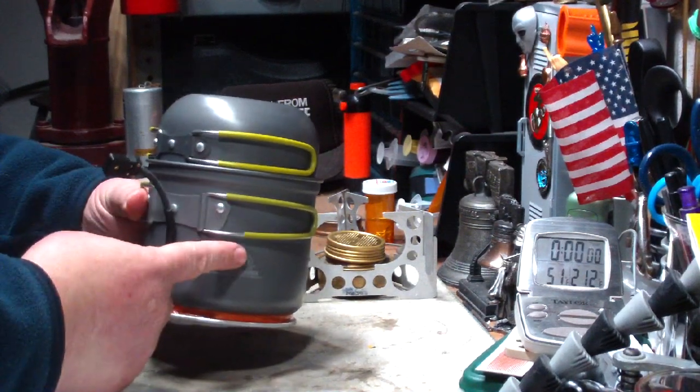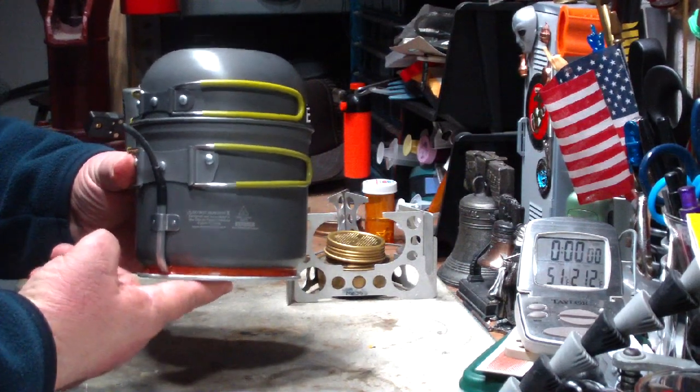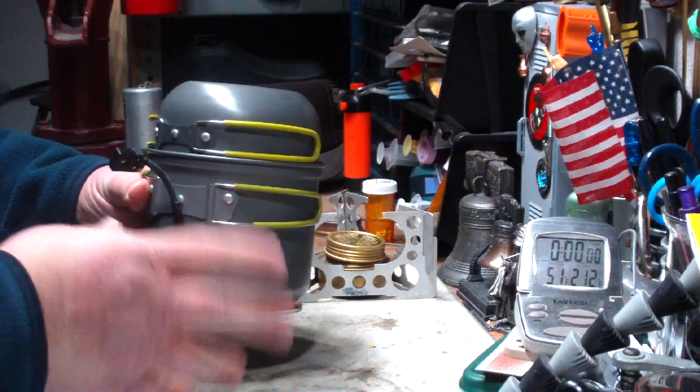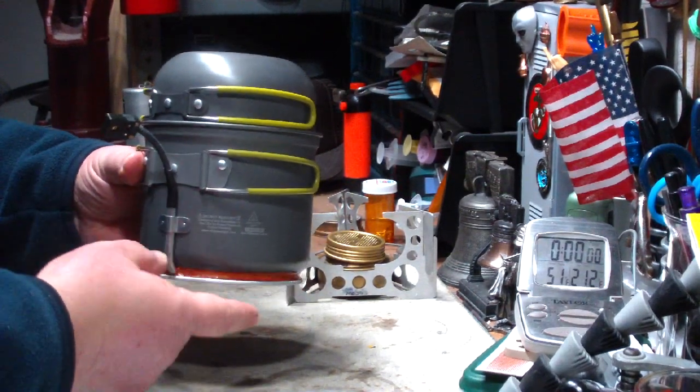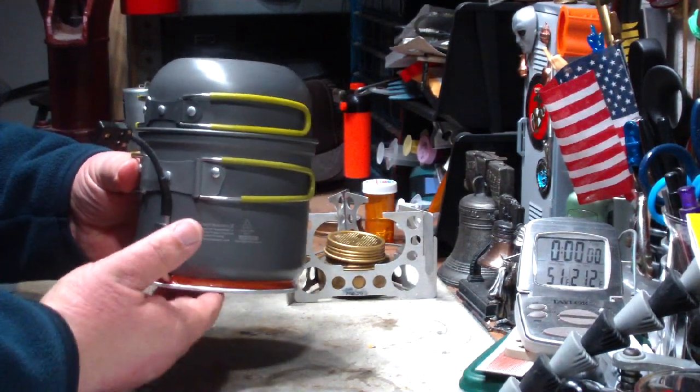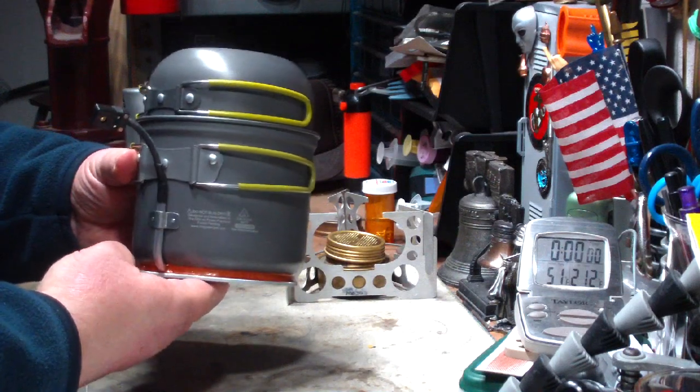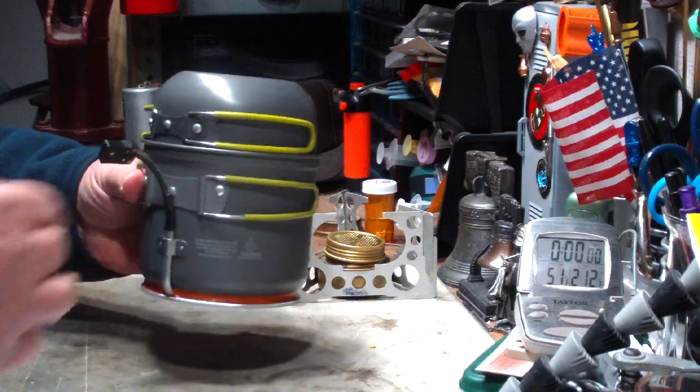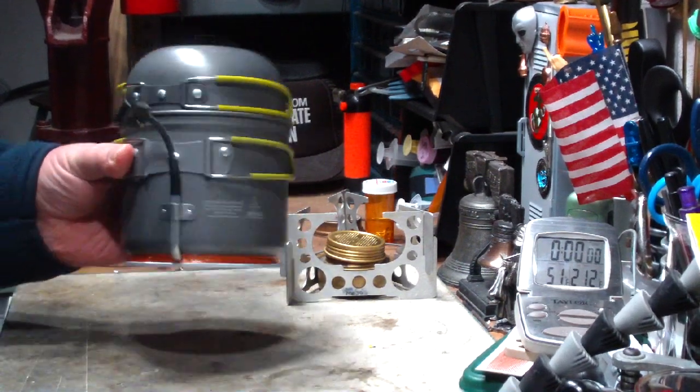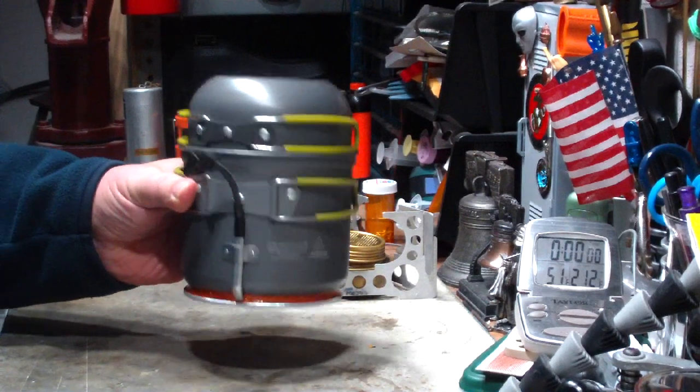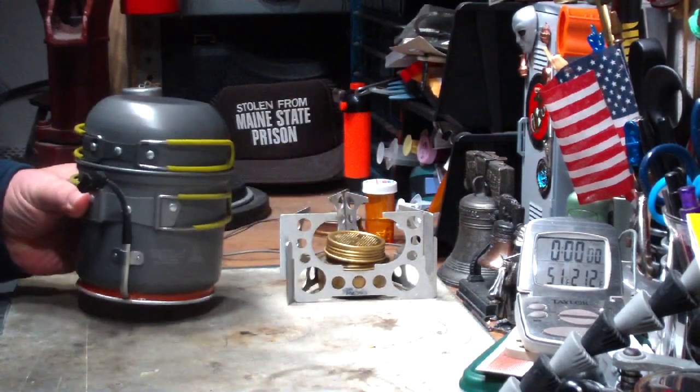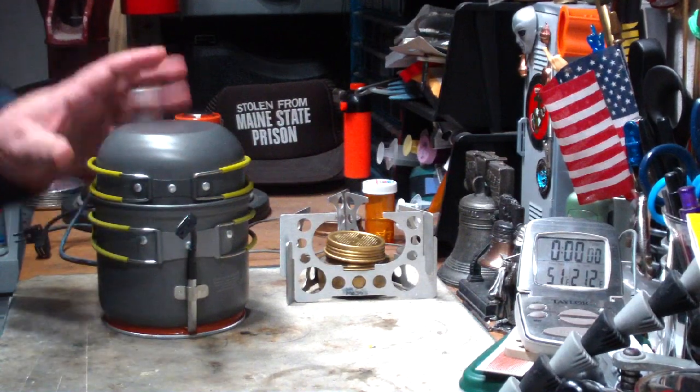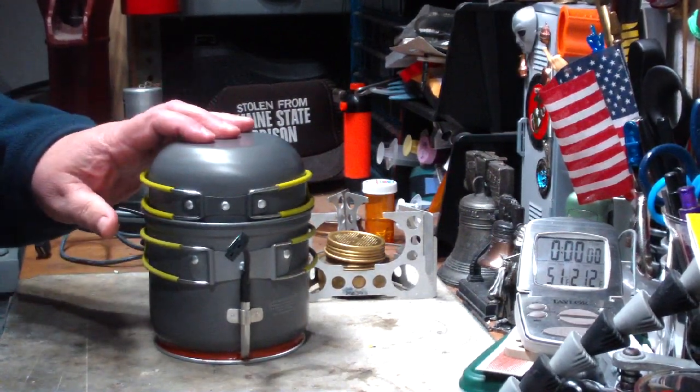Delta T means change in temperature. So the difference between the temperature on this side and the temperature on this side is a delta T. So in the winter this would probably work a whole lot better because you'd have some sort of flame on the bottom and something really cold on the inside. But for today I just want to see how it does just on boiling two cups of water and that it generates the electricity.